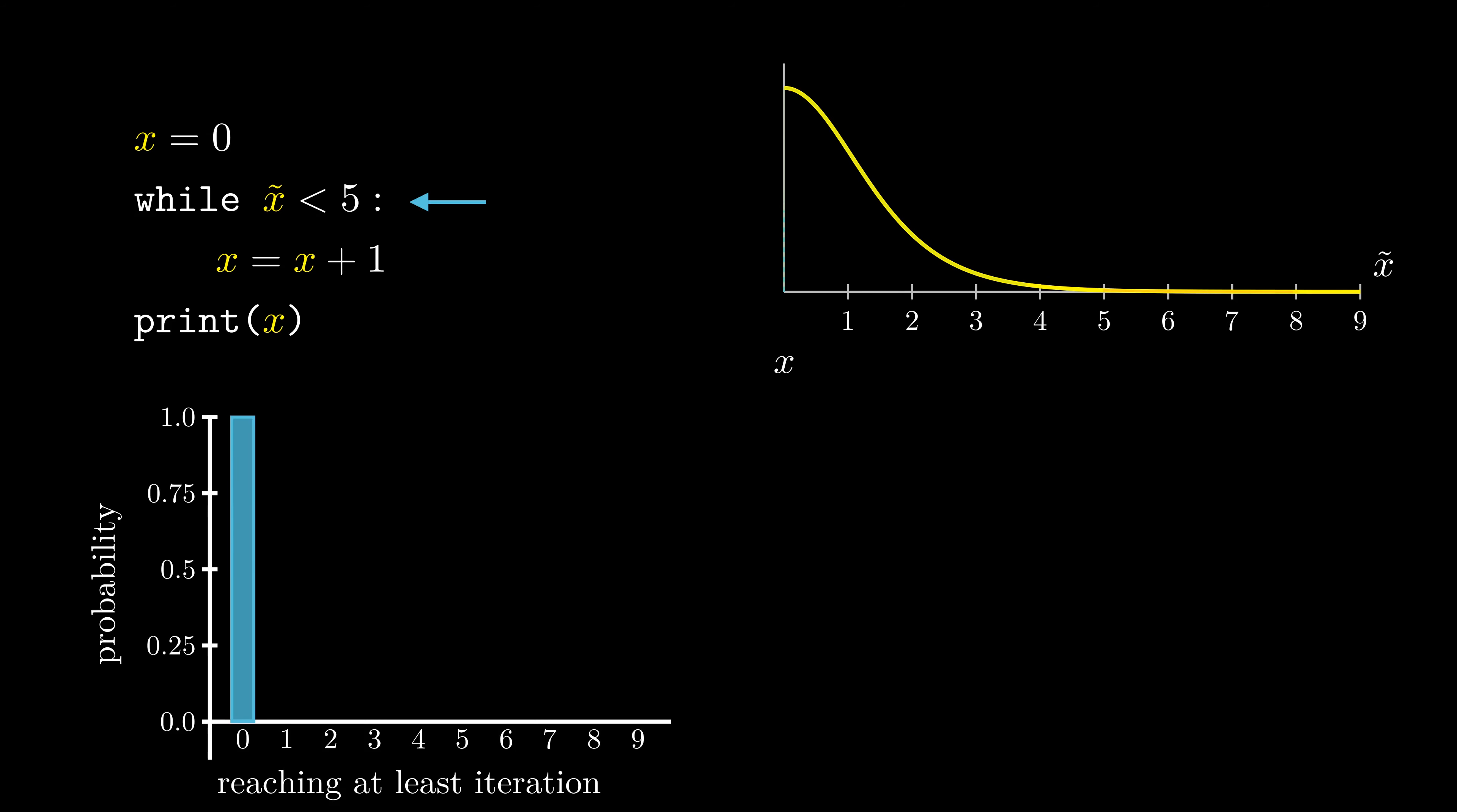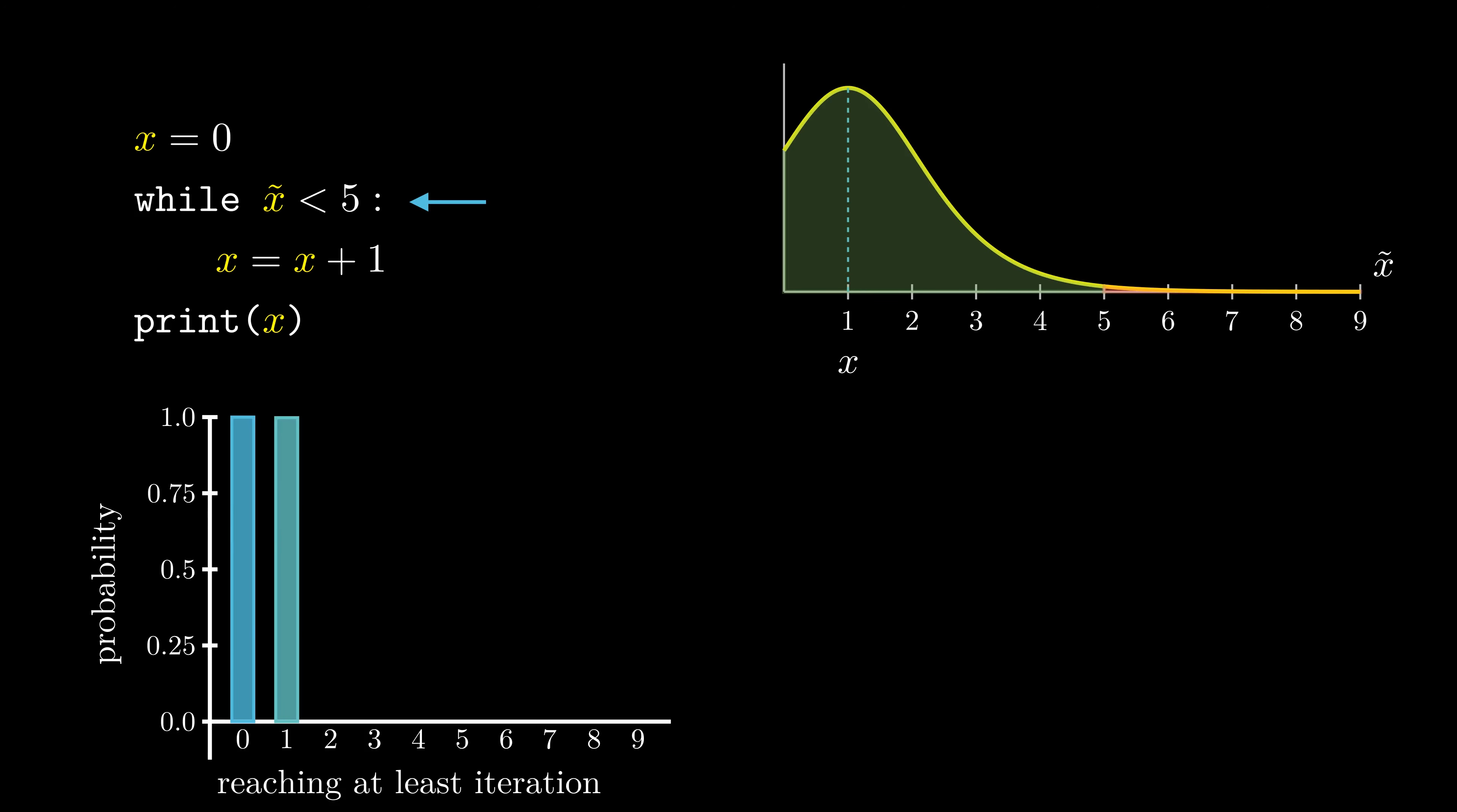Then, we perturb x by a logistic distribution, and consider the probability that x is smaller than 5, and multiply this with the probability that at least 0 iterations have been reached, and by that, obtain the probability that at least 1 iteration has been reached. We continue this until the probability of the current iteration to be reached is smaller than some epsilon.